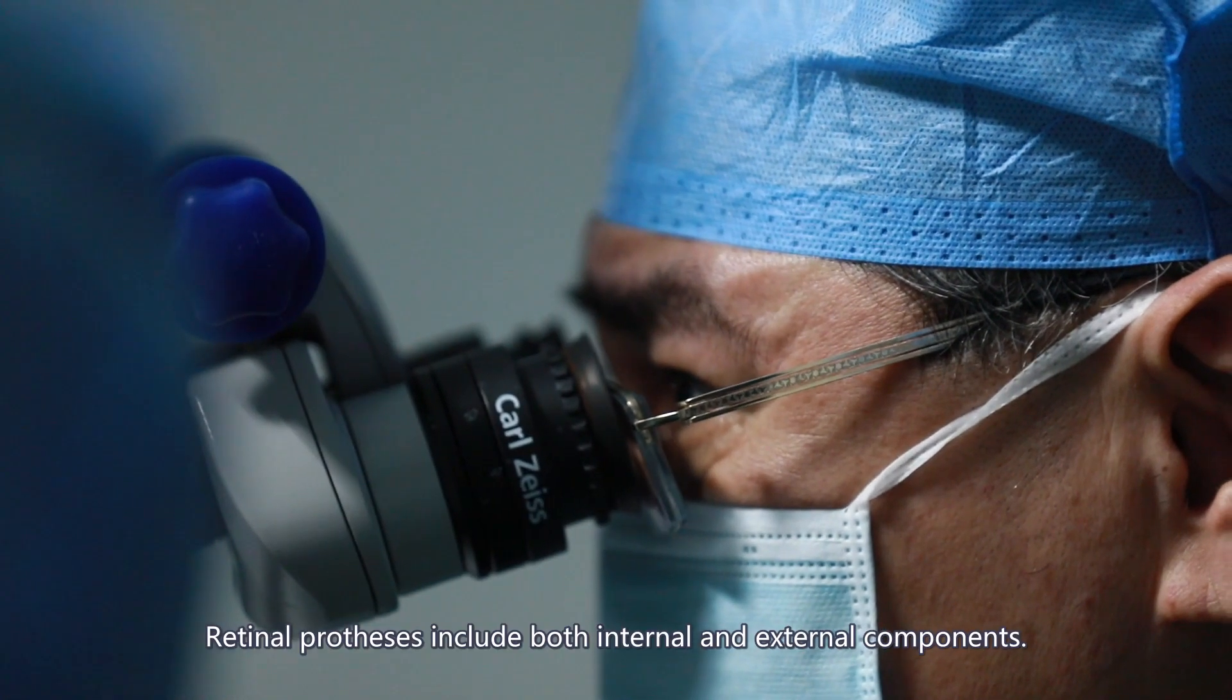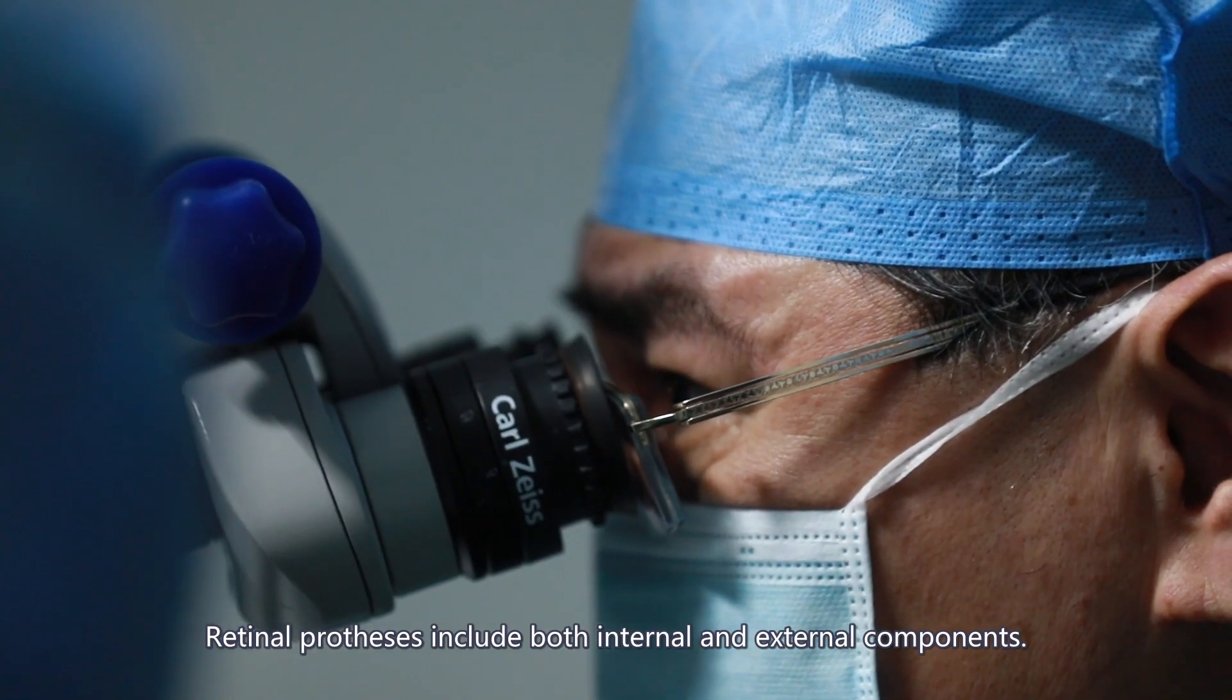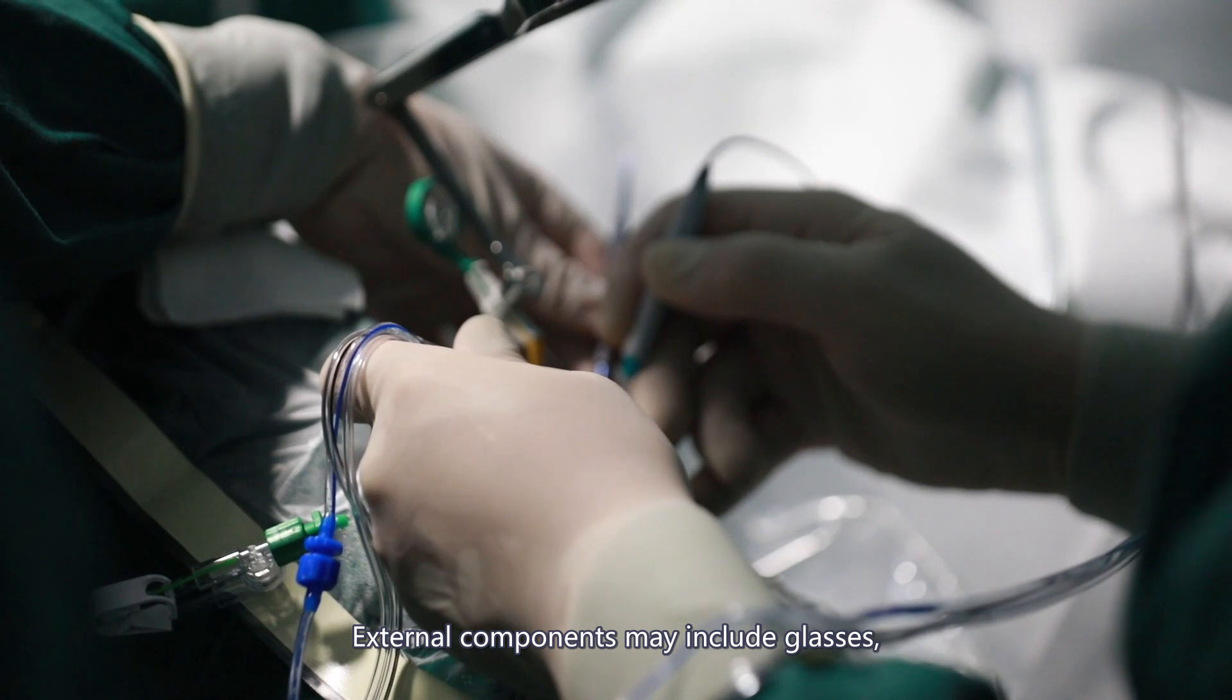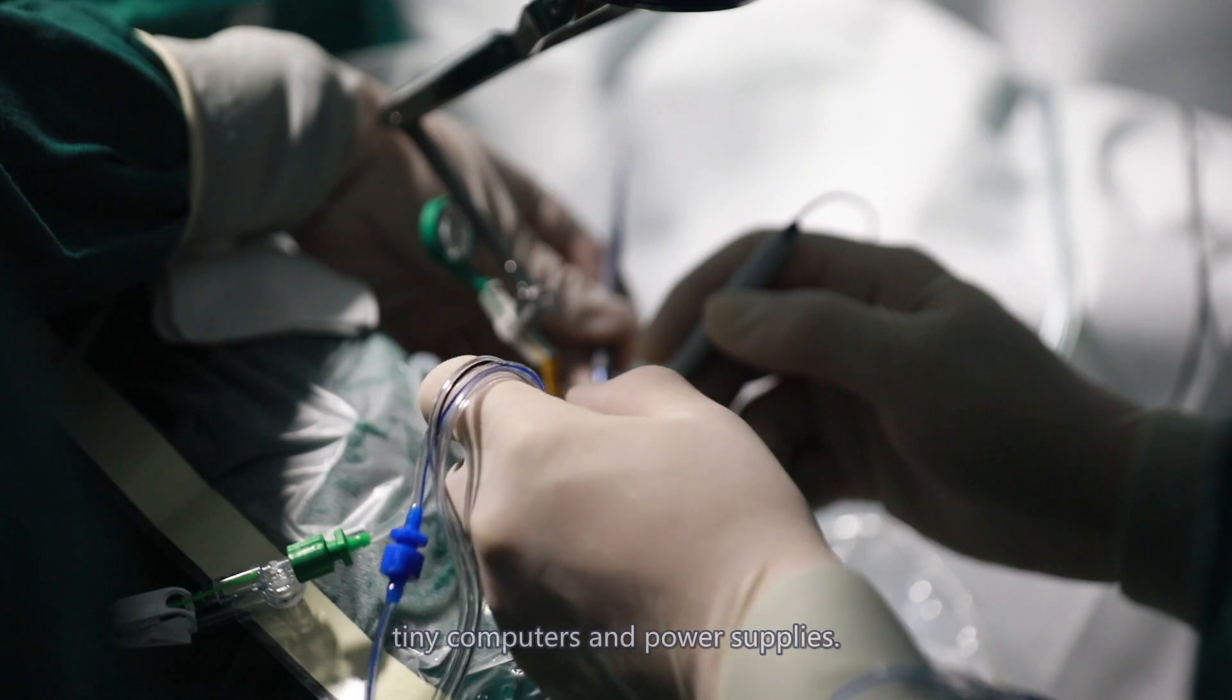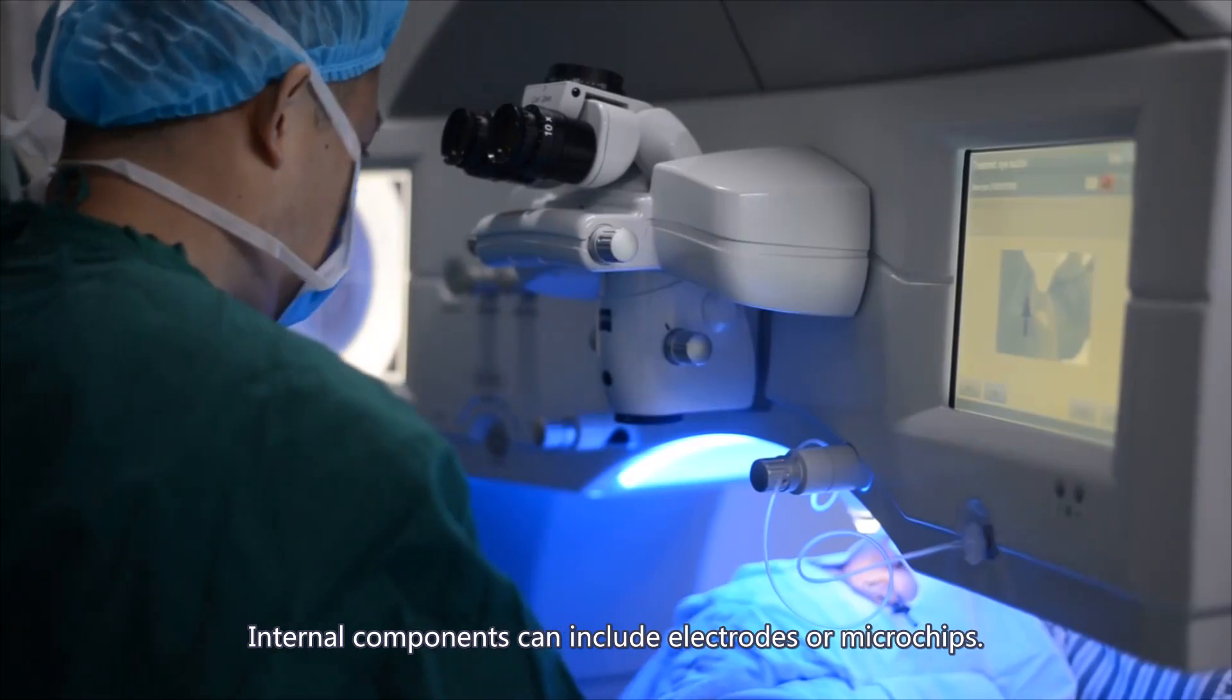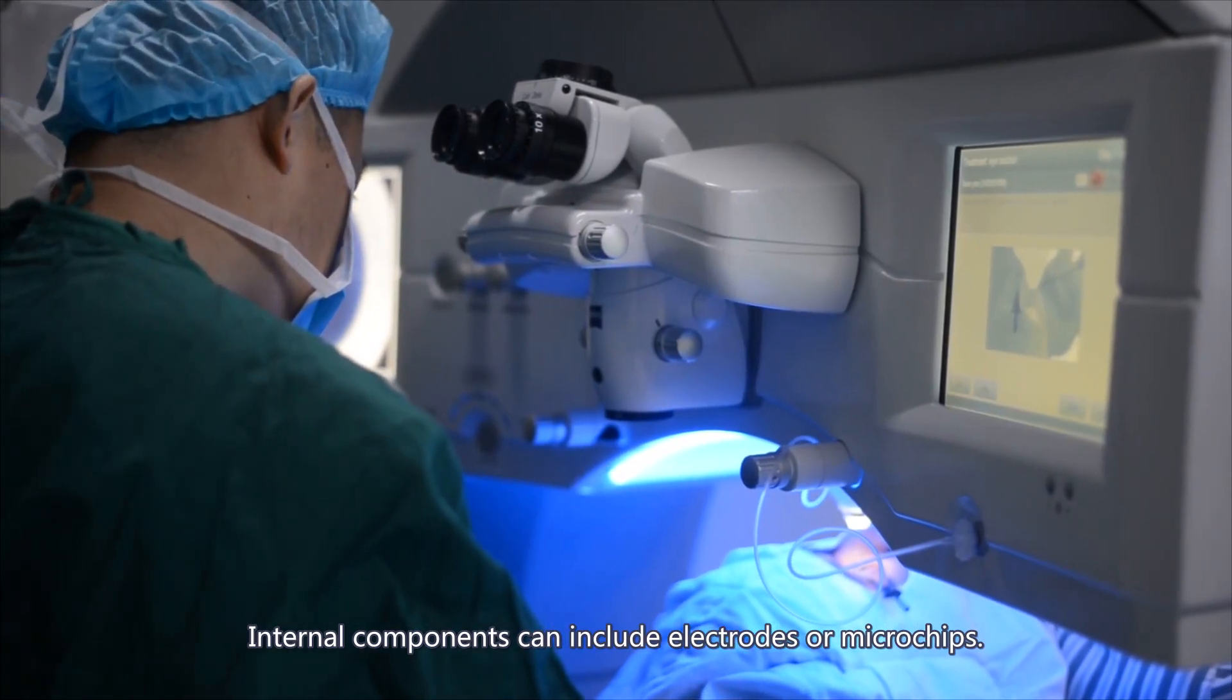Retinal prostheses include both internal and external components. External components may include glasses, tiny computers, and power supplies. Internal components can include electrodes or microchips.